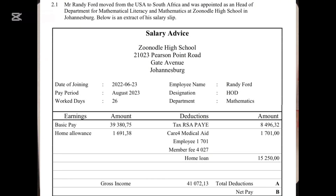The pay period is around August 2023, and the work days are 26. Looking at the employee name, we can see the position is HOD, Department of Mathematics. When we look at the earnings, he only received basic pay and the home allowance. The gross is the combination of basic pay and home allowance, which is R41,072.18.